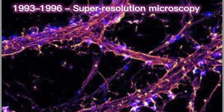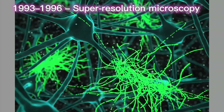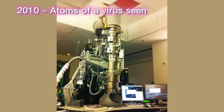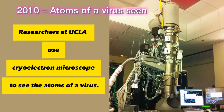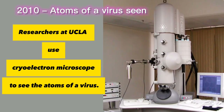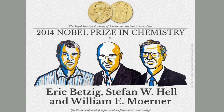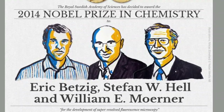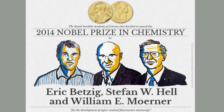Stefan Hell developed optical microscope technology that allows the capture of images with higher resolution than was previously thought possible. In 2010, researchers at UCLA used a cryo-electron microscope to see the atoms of a virus. In 2014, the Nobel Prize in Chemistry was awarded to Eric Betzig, Stefan Hell, and William Moerner for the development of super-resolved fluorescent microscopy.